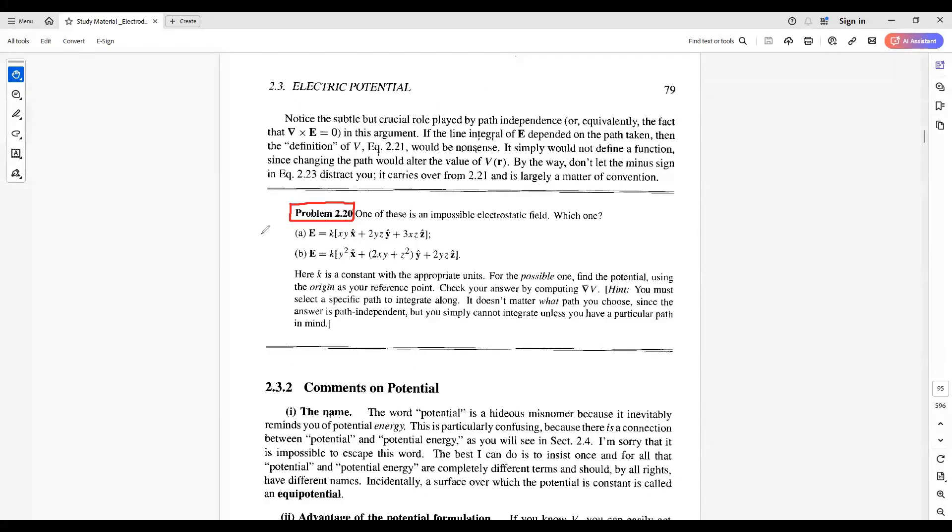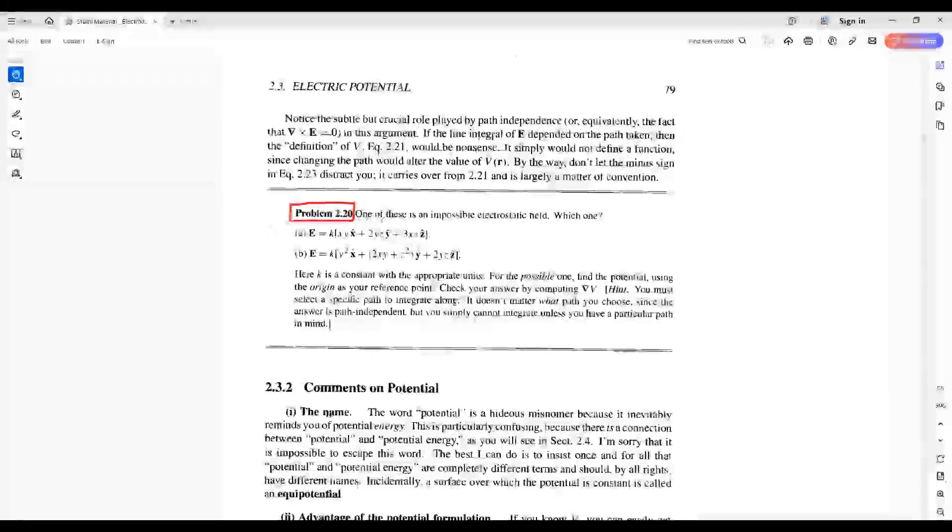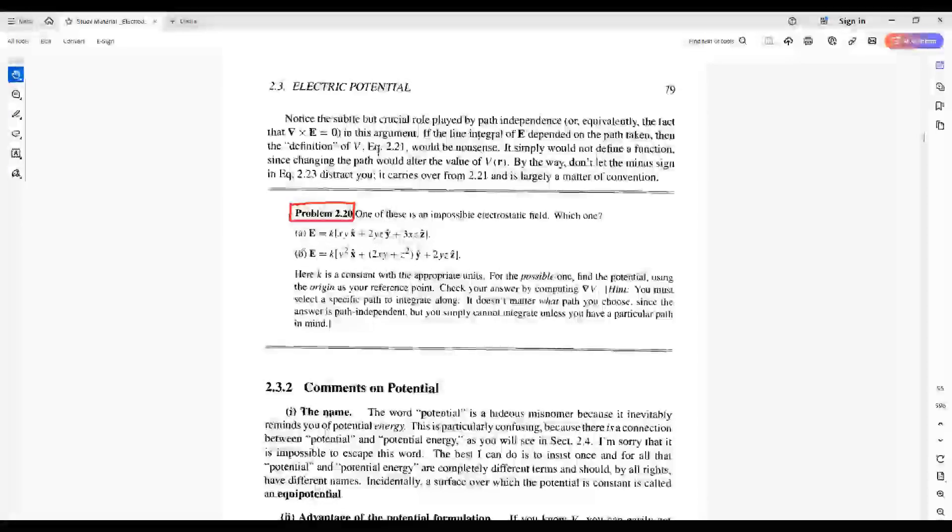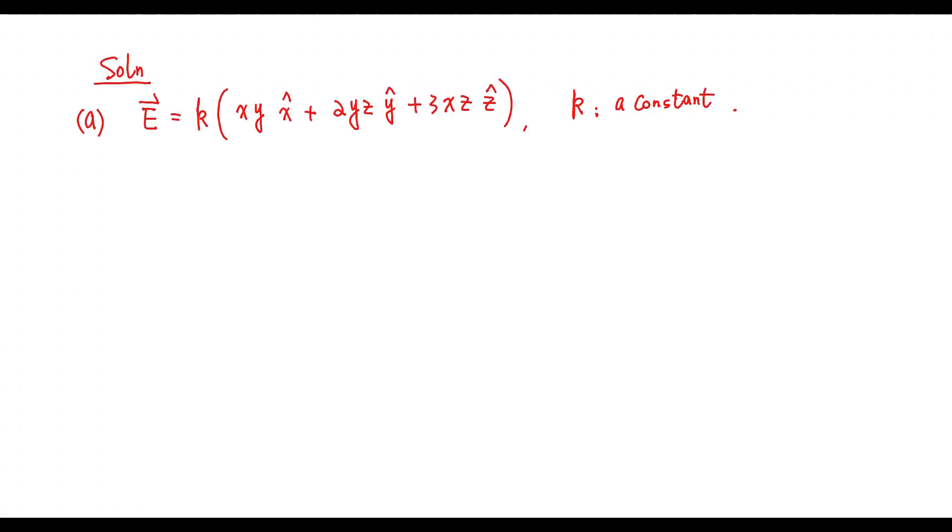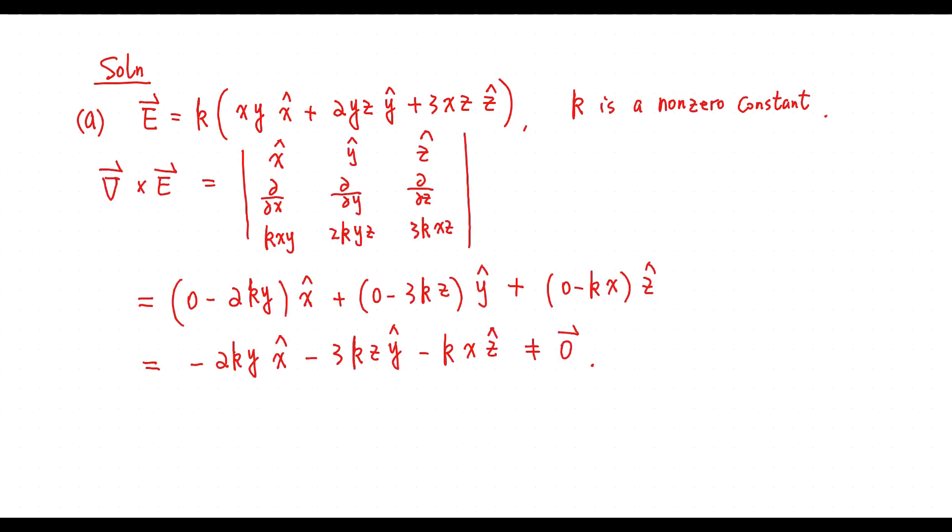Problem 2.20: One of the following A or B is an impossible electrostatic field. Which one? Solution A: Consider E is given by this vector. We have this one. So this E is an impossible electrostatic field.